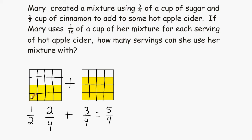Now each of these individual shaded squares represents one-sixteenth, and we could also say that each square represents one serving of hot apple cider. So we can just count these shaded squares and see how many servings we could get out of the mixture altogether.